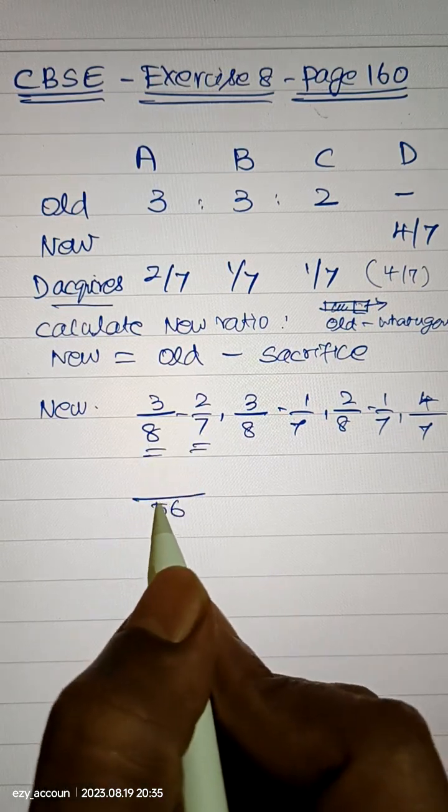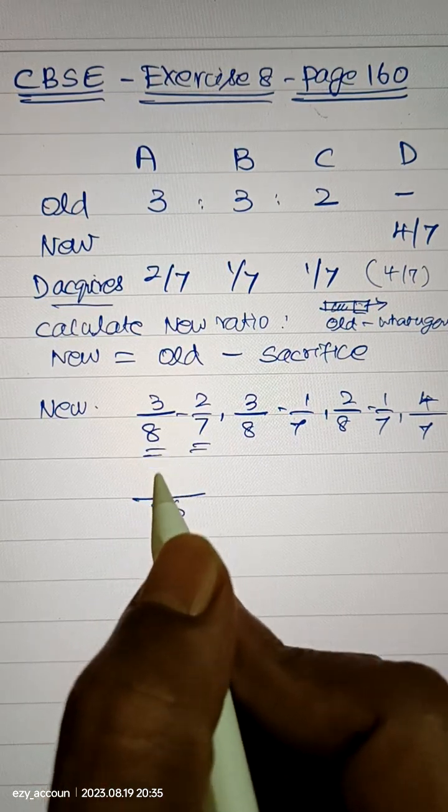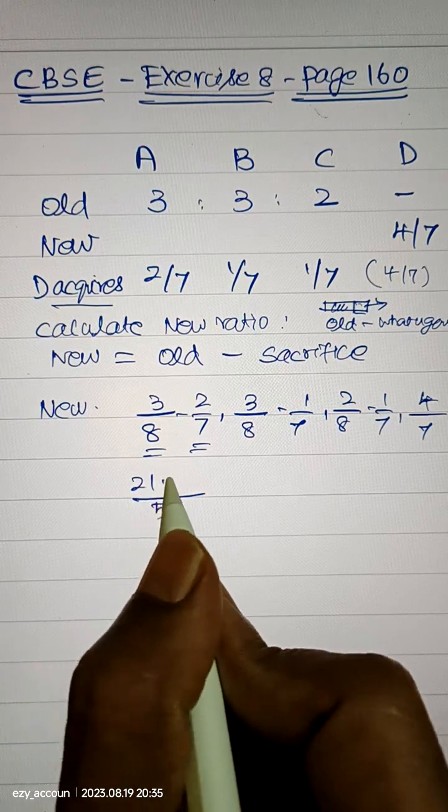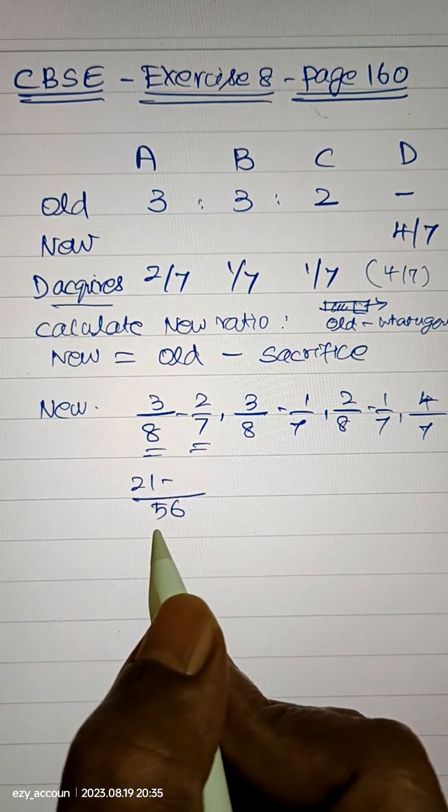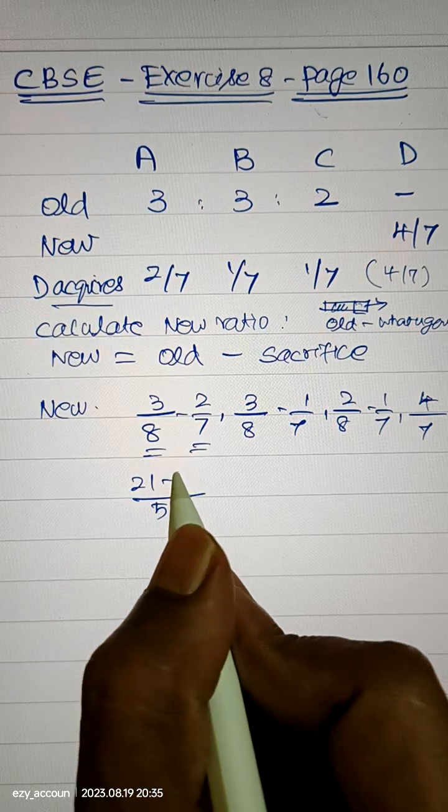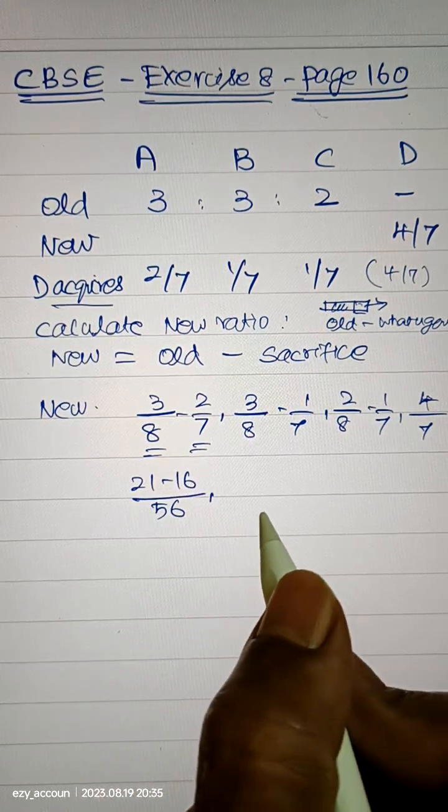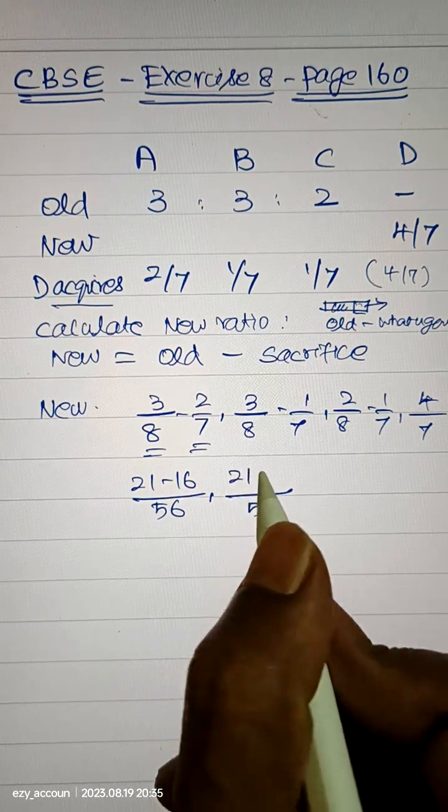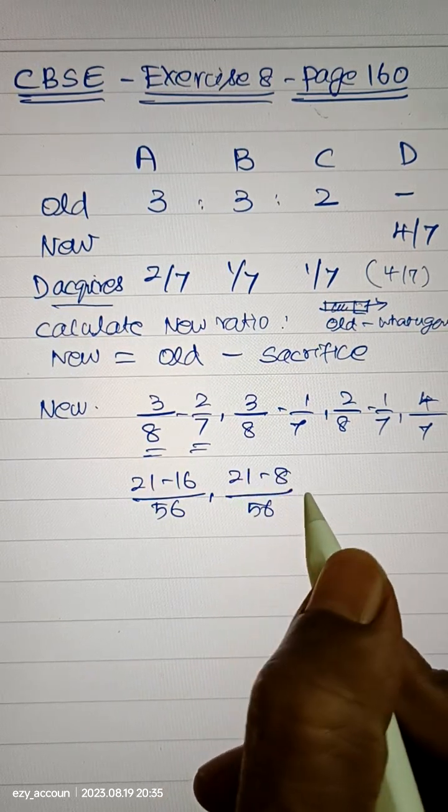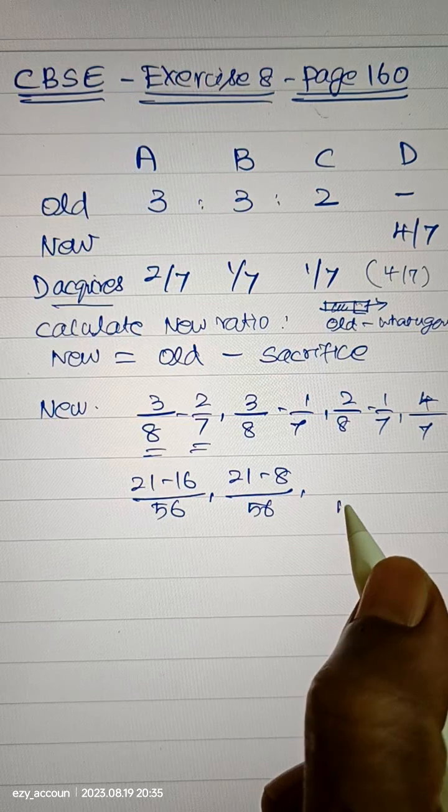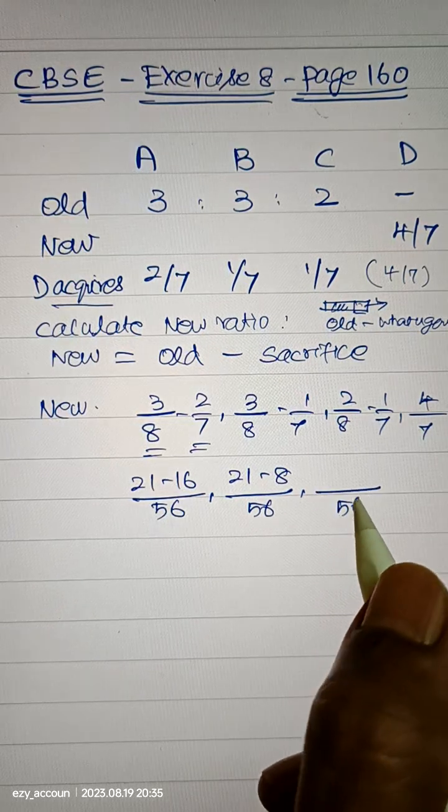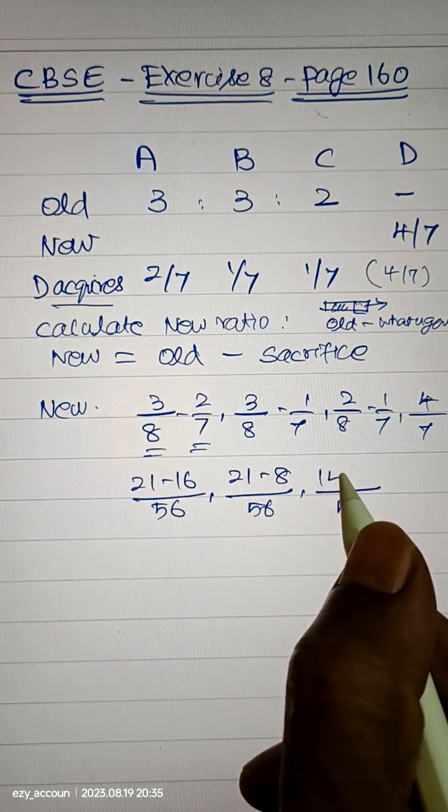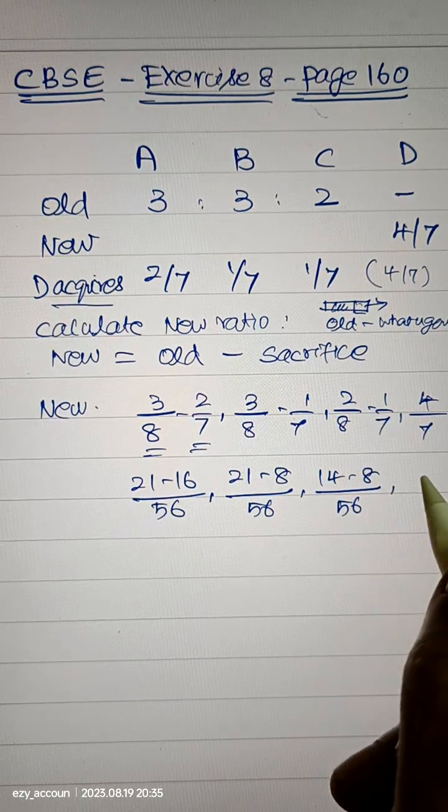So here, 3 times 7 is 21 minus 16. Again, 56 LCM, 21 minus 8. Again, 56 LCM, 14 minus 8, comma 4 by 7.